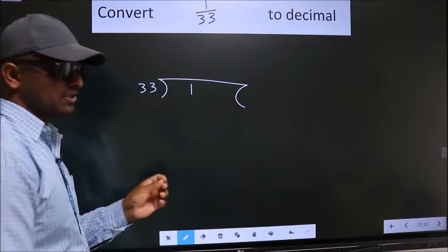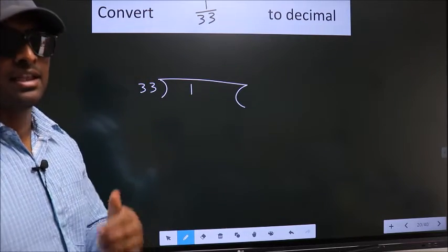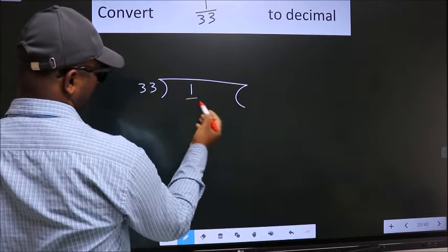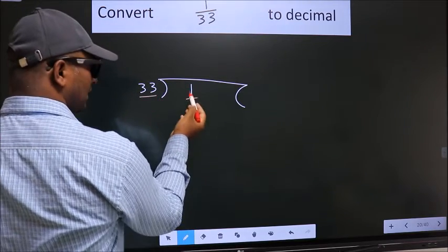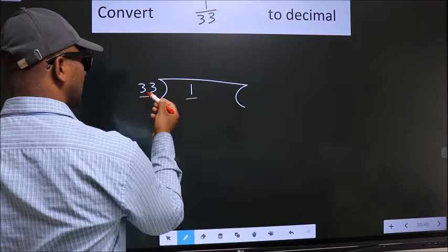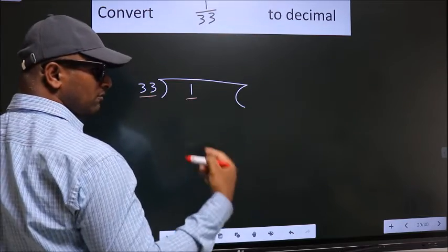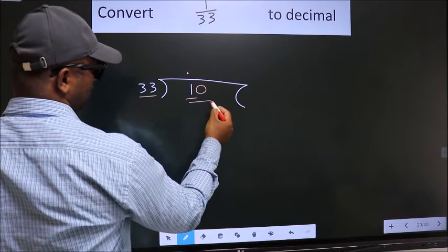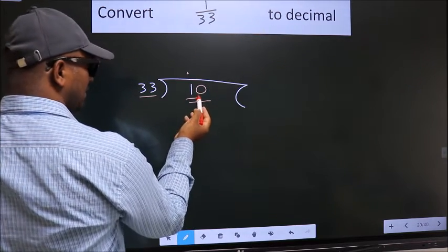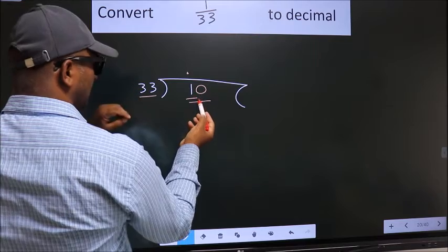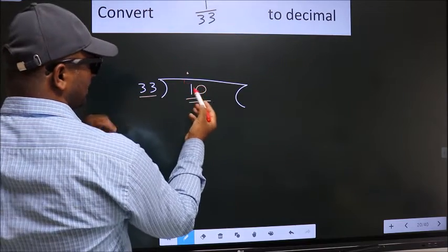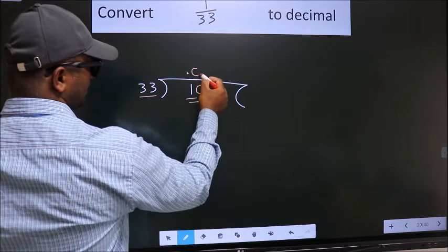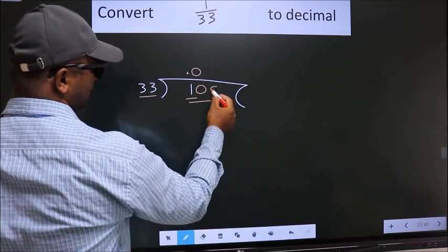This is your step 1. Here we have 1, and here 33. Since 1 is smaller than 33, we put a dot and take 0, giving us 10. 10 is still smaller than 33, and we already have the decimal, so we add another 0 to get 100.